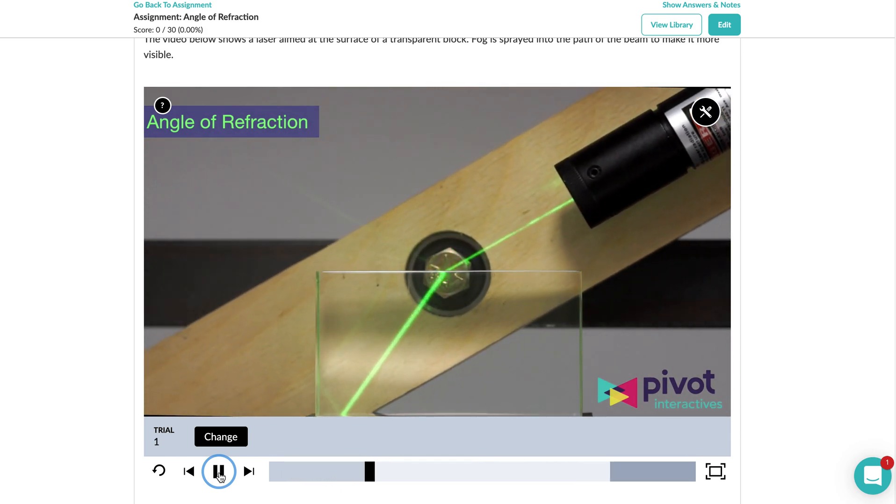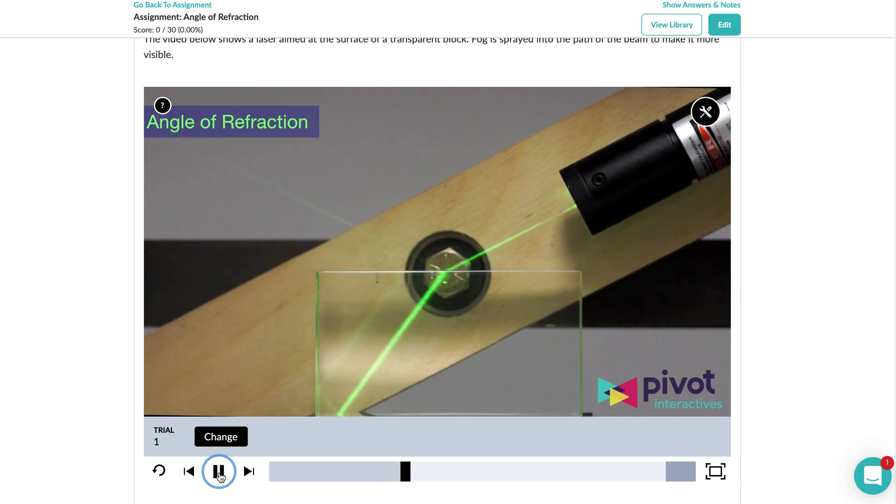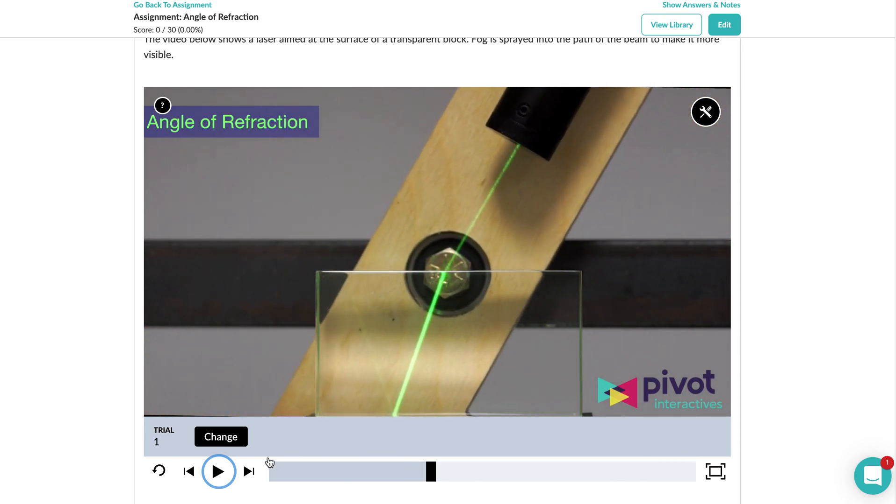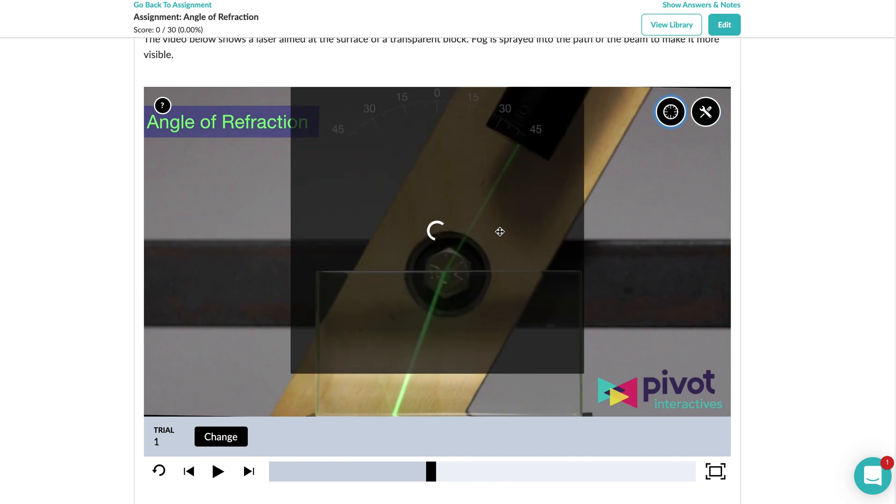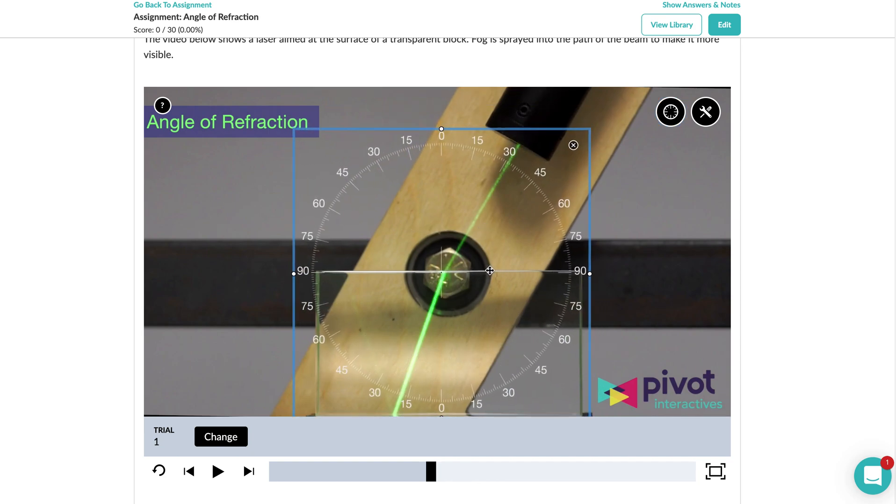If I just hit play, we can see that they put a little fog so you can see the laser in air. As it changes the angle, the light bends as it moves through the different mediums because light slows down when it travels through different mediums. We'll set up a protractor to be able to make measurements of angles.